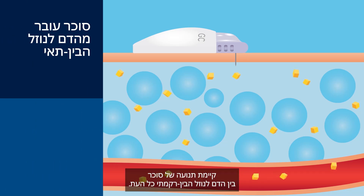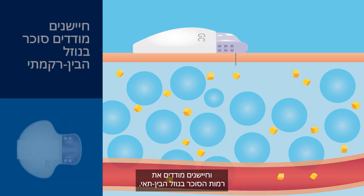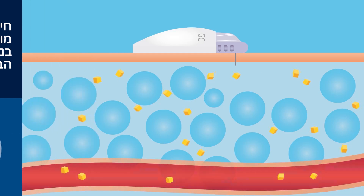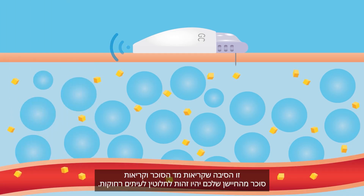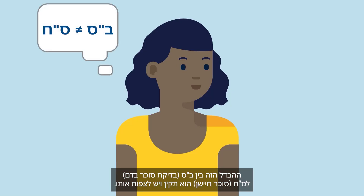Glucose is always moving between the blood and interstitial fluid. BG meters measure glucose levels in the blood, and sensors measure glucose levels in the interstitial fluid. This is why meter readings and glucose readings from your sensor will rarely be exactly the same. This difference between BG and SG is okay and should be expected.